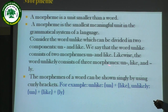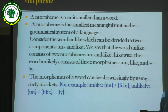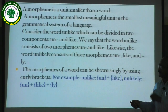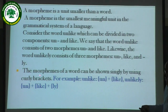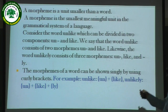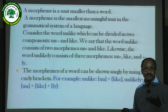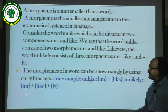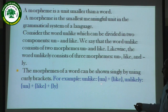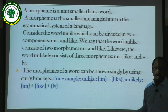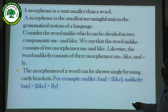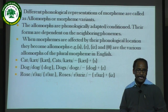The morphemes of a word can be shown singly by using curly brackets. So morphemes are generally shown with curly brackets. For example, {un} + {like} + {ly} — each morpheme is enclosed in a curly bracket. We generally write these morphemes with the help of curly brackets. Now we will turn to the next concept, which is allomorph.